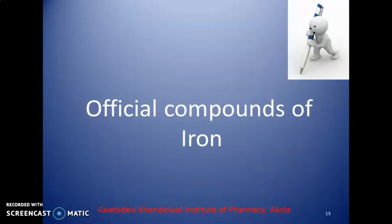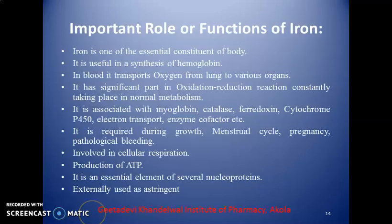In this topic we are going to discuss the official compounds of iron — the important roles and functions of iron. Iron is a very essential constituent of our body. It is necessary for the synthesis of hemoglobin, which is necessary to transport oxygen from the lungs to various organs and parts of the body. It has a significant part in the oxidation-reduction reactions constantly taking place in normal metabolism.